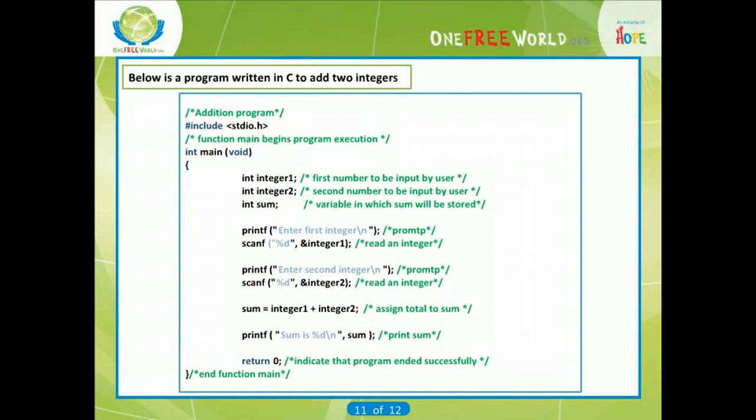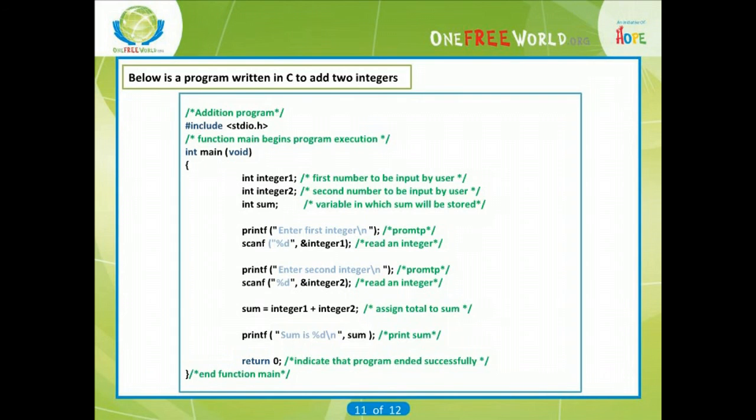Below is a program written in C to add two integers. A possible output to the program can be: enter first integer 45, enter second integer 72, sum is 117.